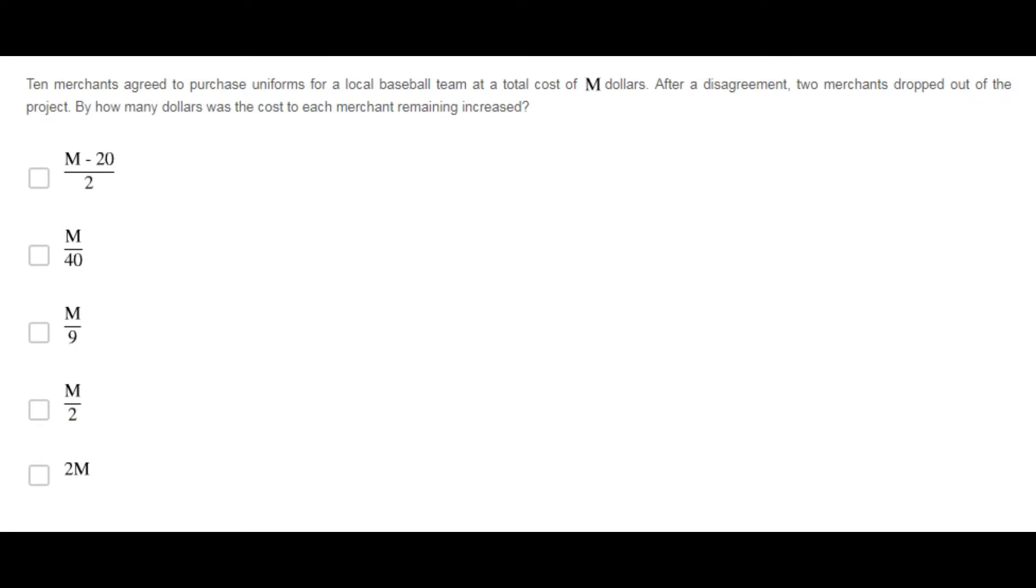Ten Americans agreed to purchase uniforms for a local baseball team at a total cost of M dollars. After a disagreement, two Americans dropped out of the project. By how many dollars was the cost to each American remaining increased?